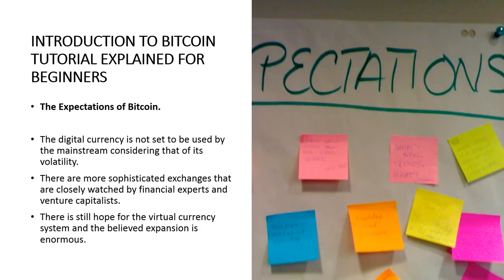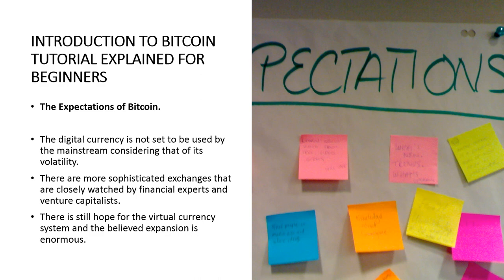The expectation of Bitcoin: evaluators have said that the digital currency is not ready to be used by the mainstream because of its volatility. They also point to the hacking of Bitcoin exchanges in the past that has resulted in the loss of several millions of dollars. Admirers of digital currencies have said that there are now more sophisticated exchanges closely watched by financial experts and venture capitalists. Authorities have said that there is still hope for a virtual currency system and the potential for growth is enormous.